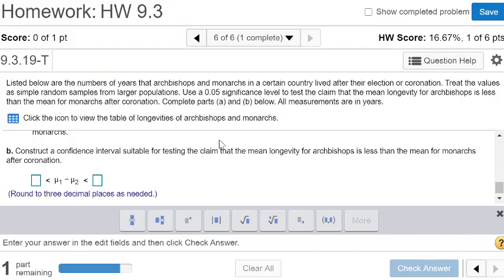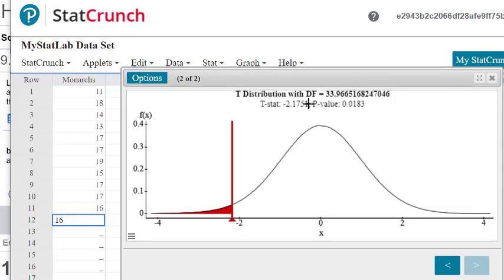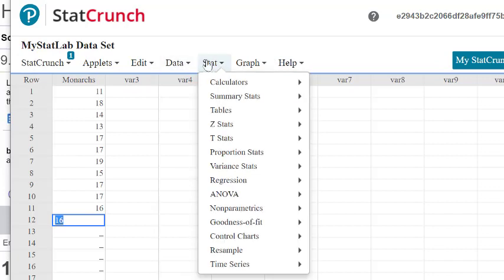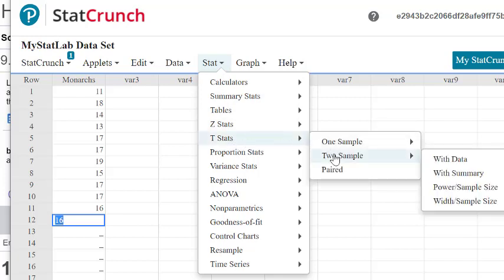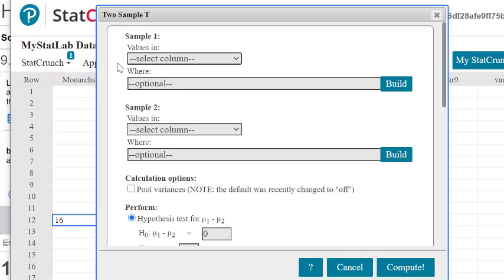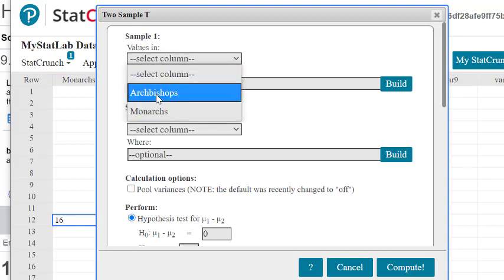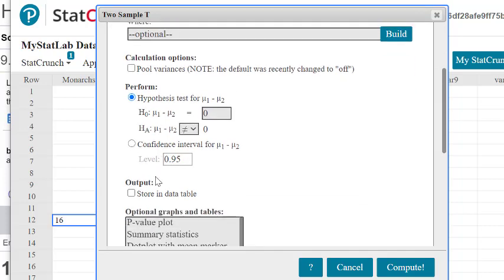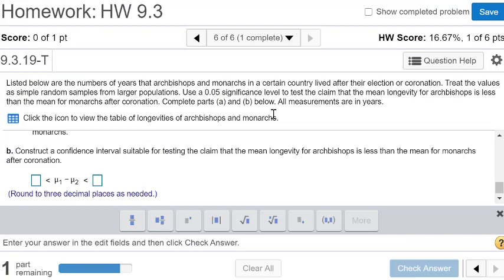Now they want us to construct the confidence interval. Let's go back to our set over here. Let's close this one. Let's construct the confidence interval. So we'll do the stat t2 sample with data again. And again, we have the archbishops in the first set and the monarchs in the second set. And this time we want to construct the confidence interval.